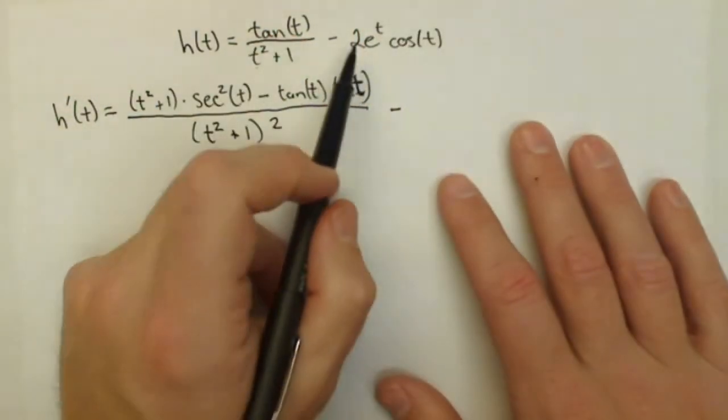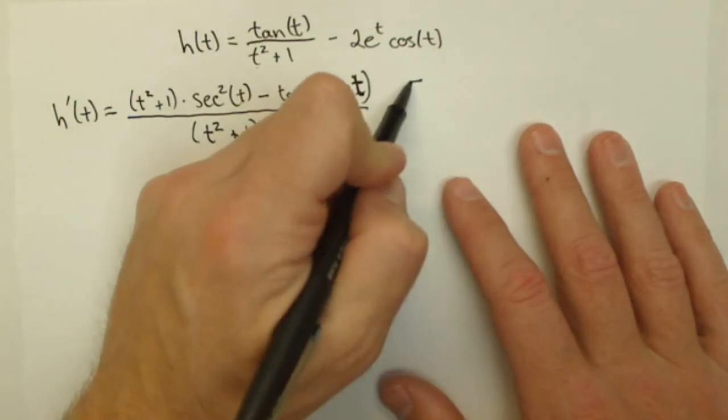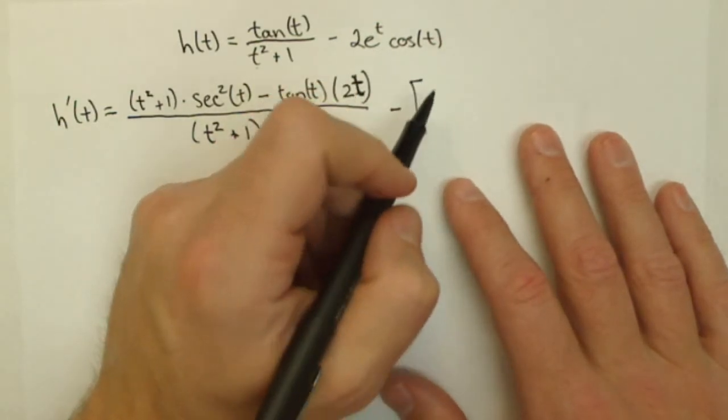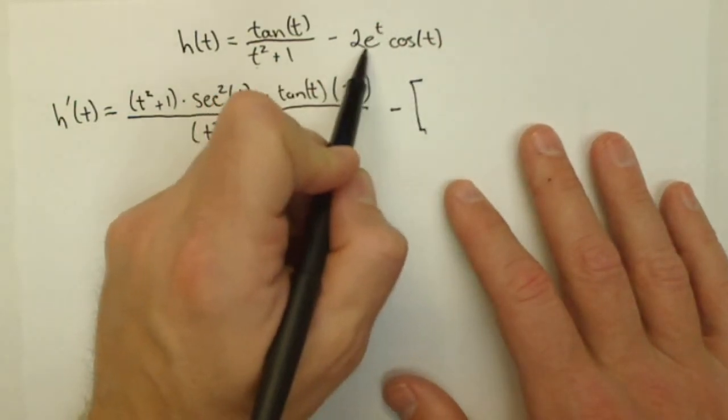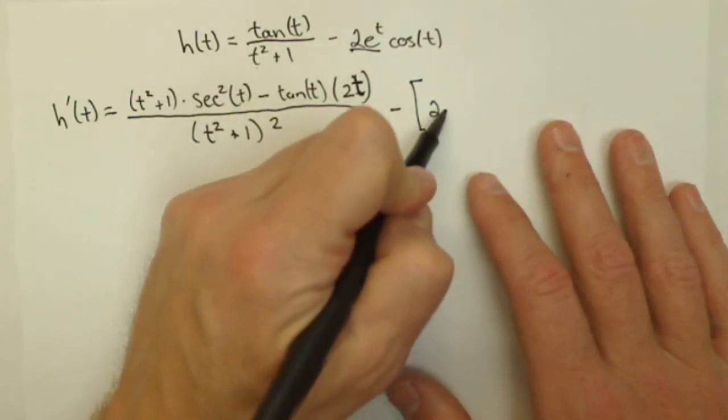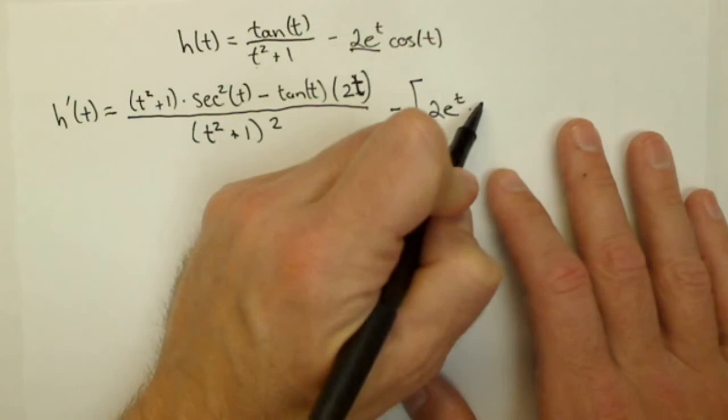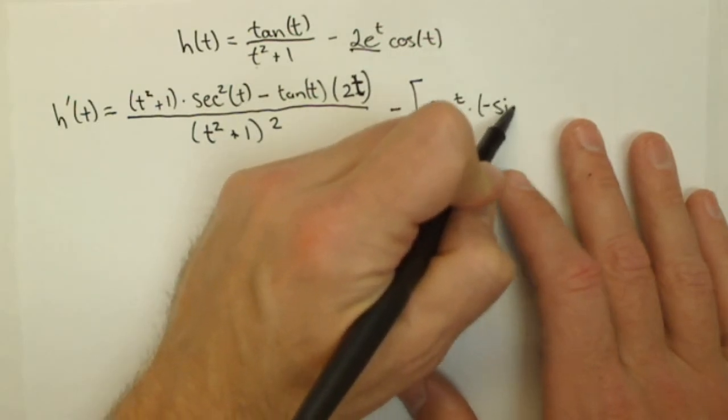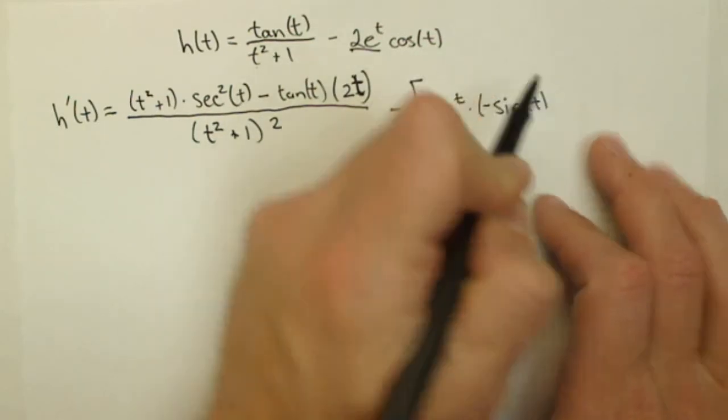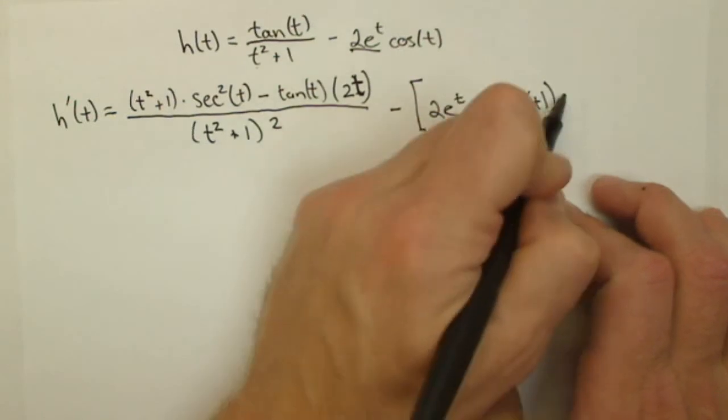Now minus, now we're going to do the derivative of this part with a product rule. So that's going to be holding the first part constant, 2e to the t times the derivative of cosine, which is negative sine of t, plus,